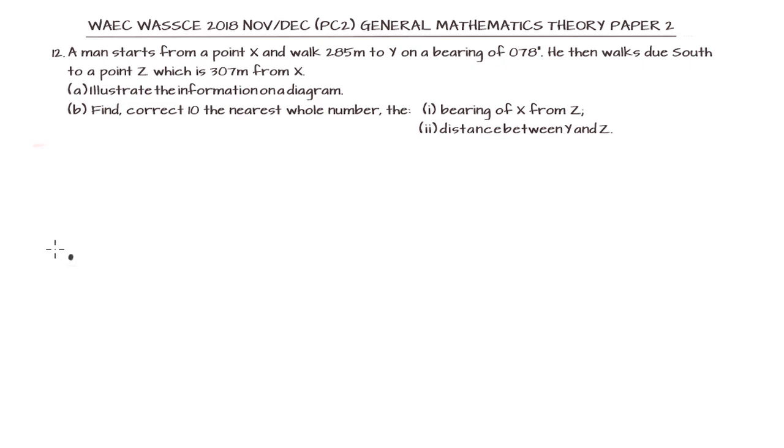If we start from point X and draw our cardinal coordinates, then an estimate of 078 degrees from the north (because that's where our bearings start from), we measure 078 degrees. Then the man moves to Y on that bearing at a distance of 285 meters. So it gets to Y. If we also draw our cardinal points on Y, it's moving south down to point Z.